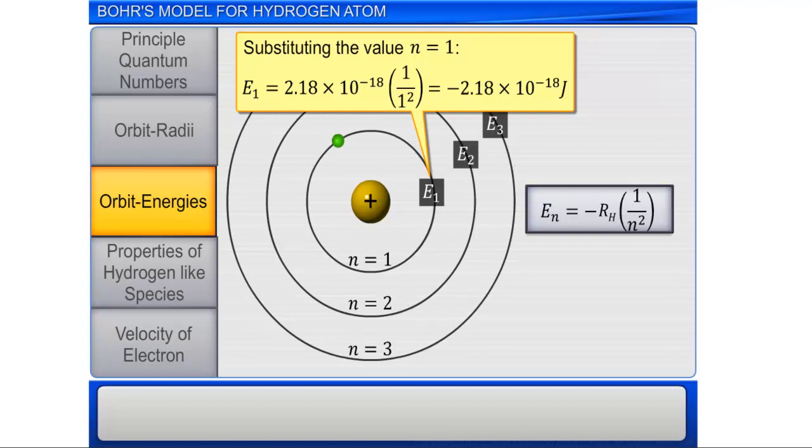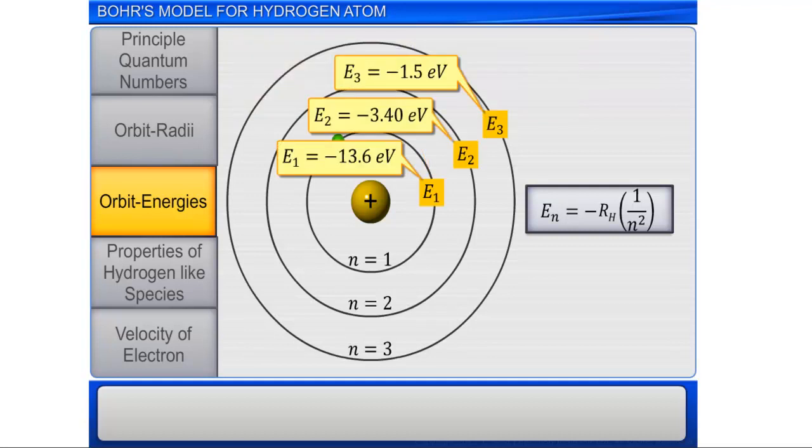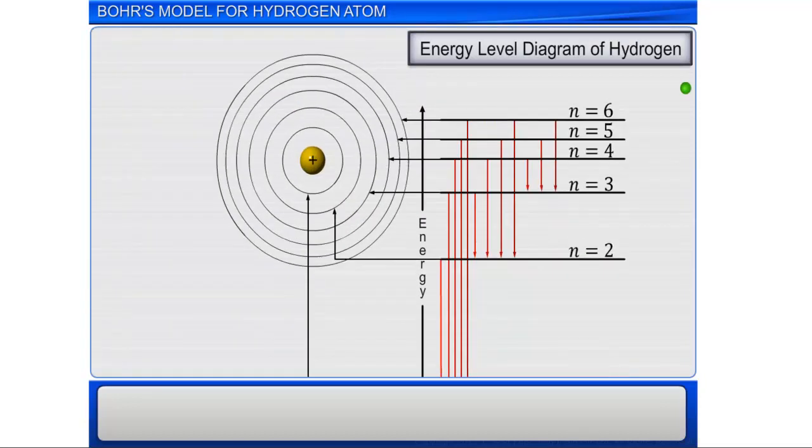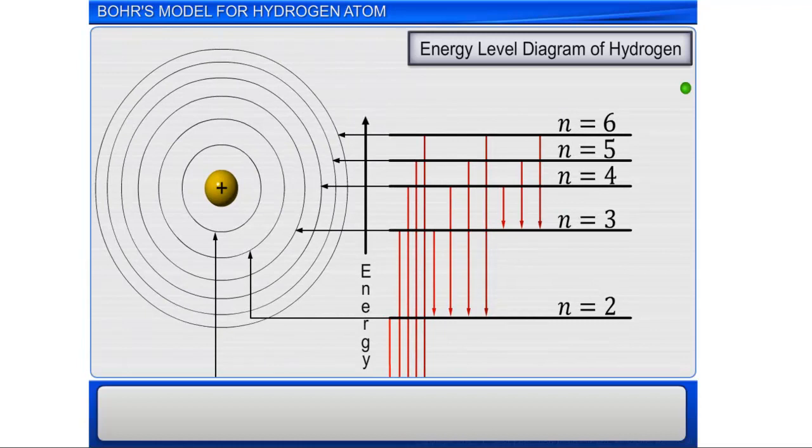The energies of excited states can be measured in the same way, and represented in the form of an energy level diagram. Note that the energy of the stationary state, n equal to infinity, is zero.